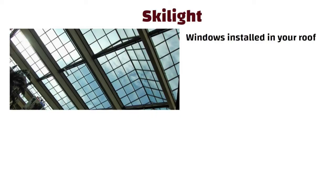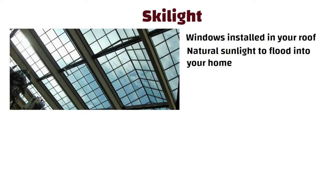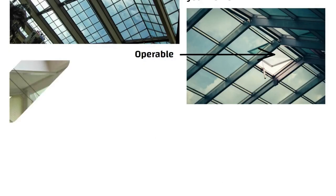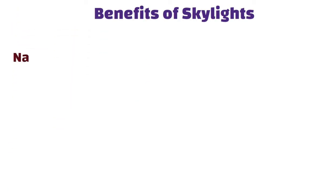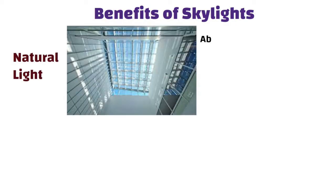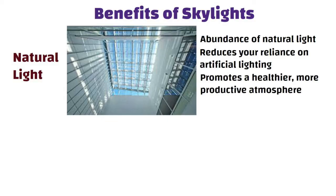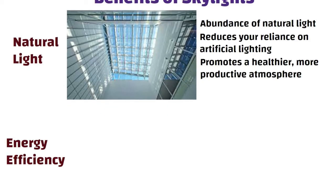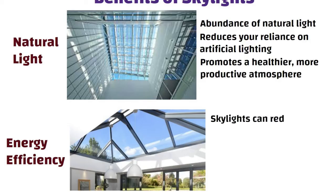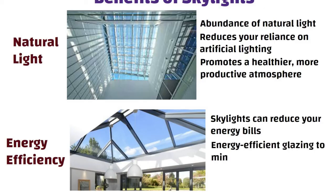Skylight. Skylights are windows installed in your roof, allowing natural sunlight to flood into your home. They come in various shapes and sizes, from fixed to operable, and even with blinds or shades for control. Natural light: skylights provide an abundance of natural light, which reduces your reliance on artificial lighting and promotes a healthier, more productive atmosphere. Energy efficiency: by maximizing daylight, skylights can reduce your energy bills, and they can be designed with energy-efficient glazing to minimize heat loss.